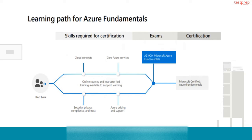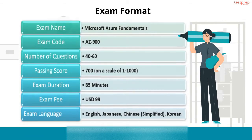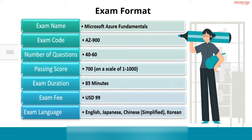Exam Format: The Microsoft Azure Fundamentals AZ-900 exam comprises 40 to 60 questions that need to be answered within 85 minutes. There are different types of questions including case study, short answers, multiple choice, mark review, drag and drop, etc. This exam will cost $99. You must score 700 or more points to pass the AZ-900 exam.